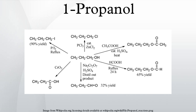1-propanol is manufactured by catalytic hydrogenation of propionaldehyde. The propionaldehyde is itself produced via the OXO process, by hydroformylation of ethylene using carbon monoxide and hydrogen in the presence of a catalyst such as cobalt octacarbonyl or a rhodium complex: H2C=CH2 + CO + H2 → CH3CH2CH=O, then CH3CH2CH=O + H2 → CH3CH2CH2OH.